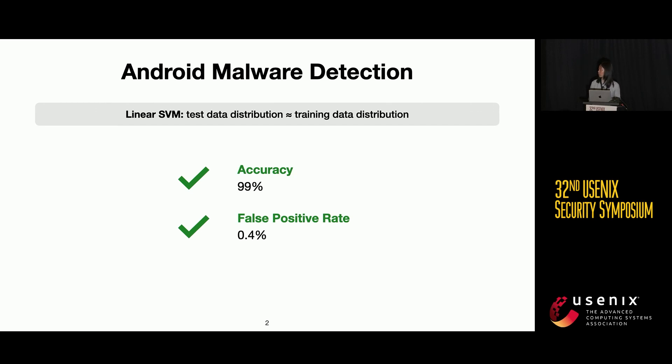We can get something like 99% accuracy and only 0.4% false positive rate. So, is there even anything left to do for Android malware detection? Unfortunately, the answer is the problem is not solved.